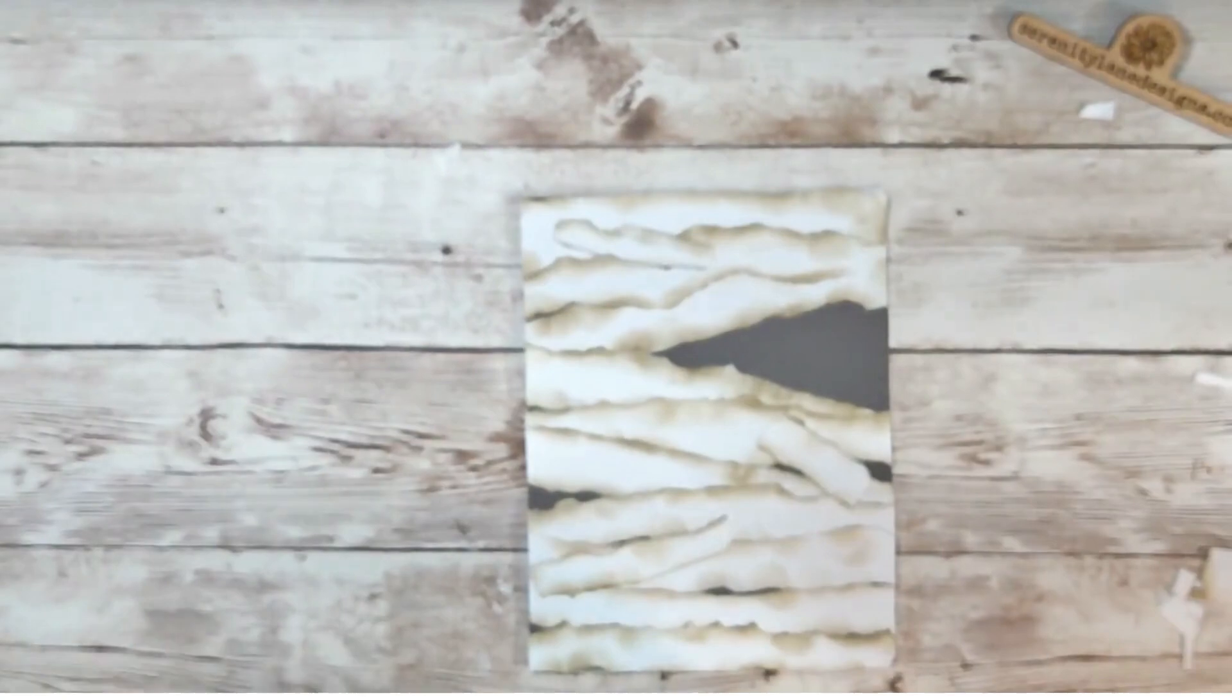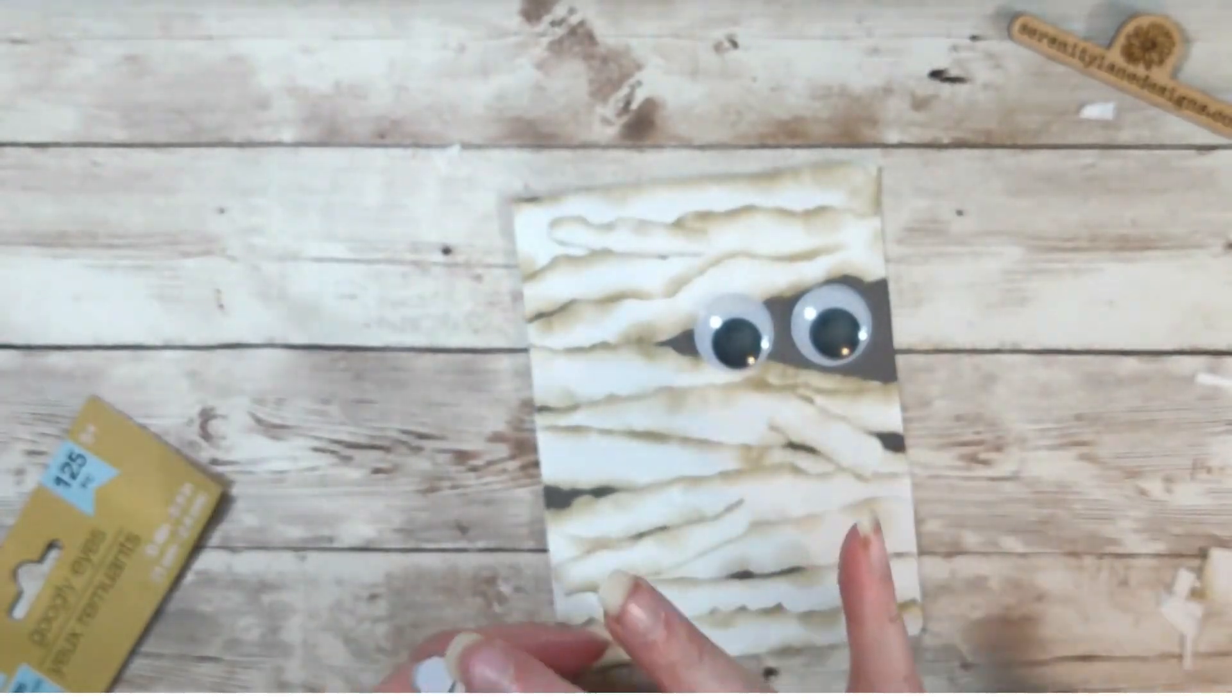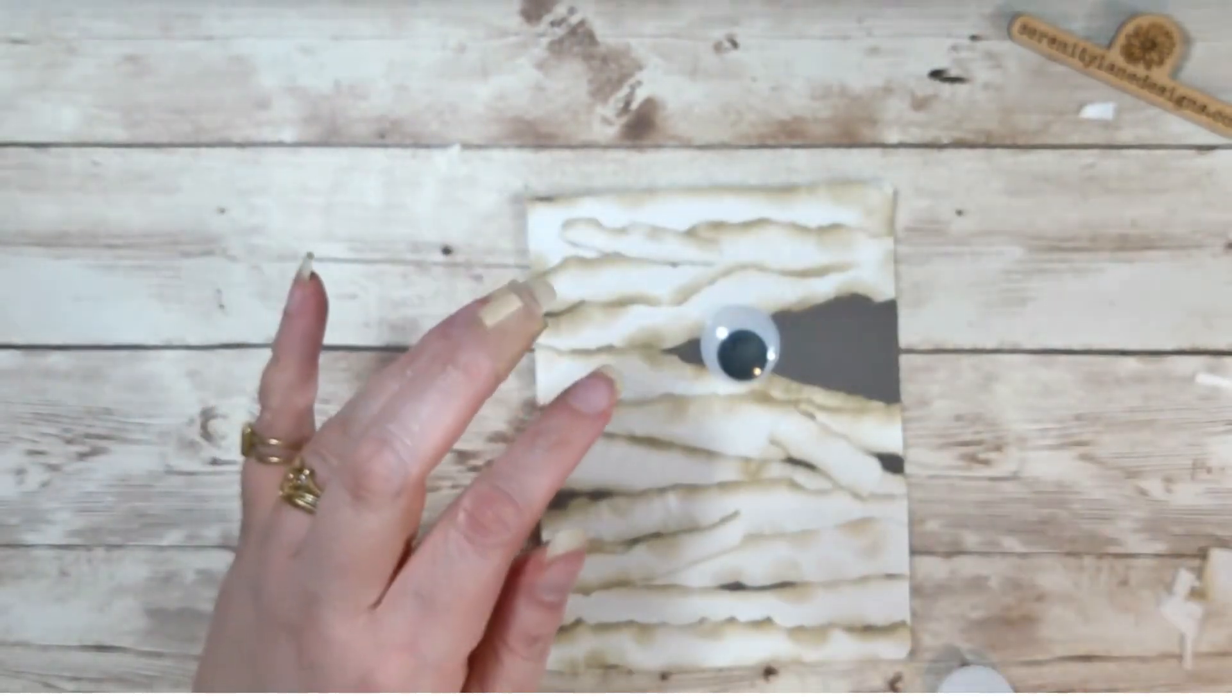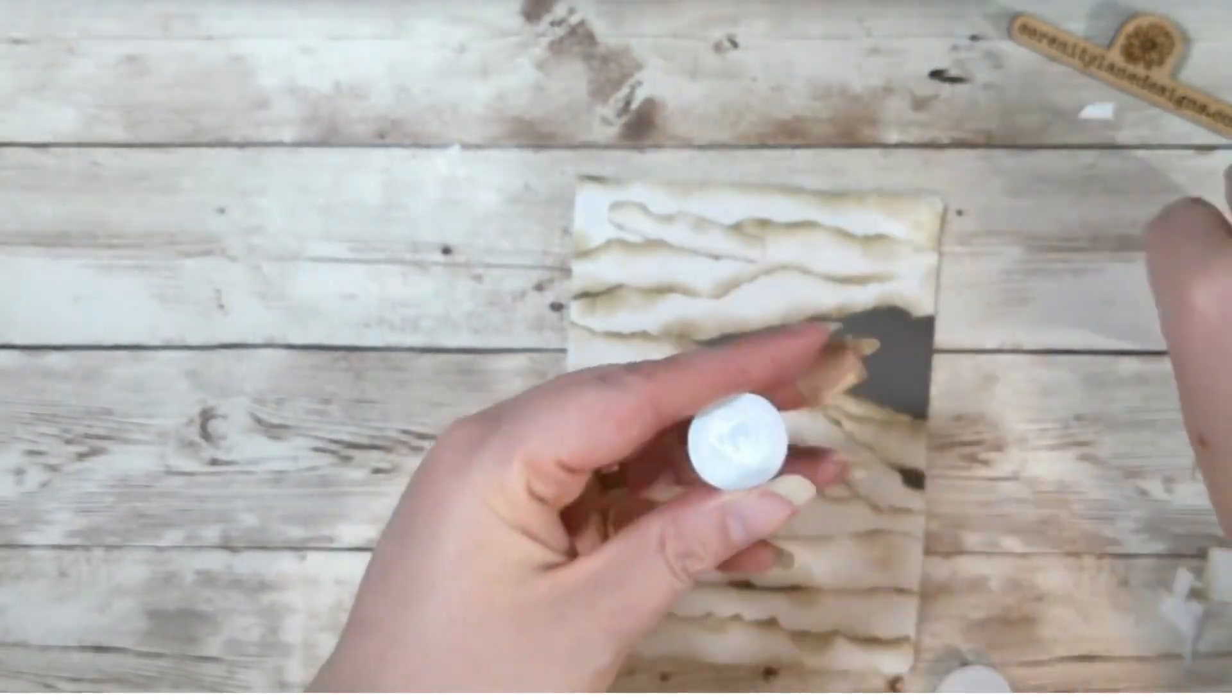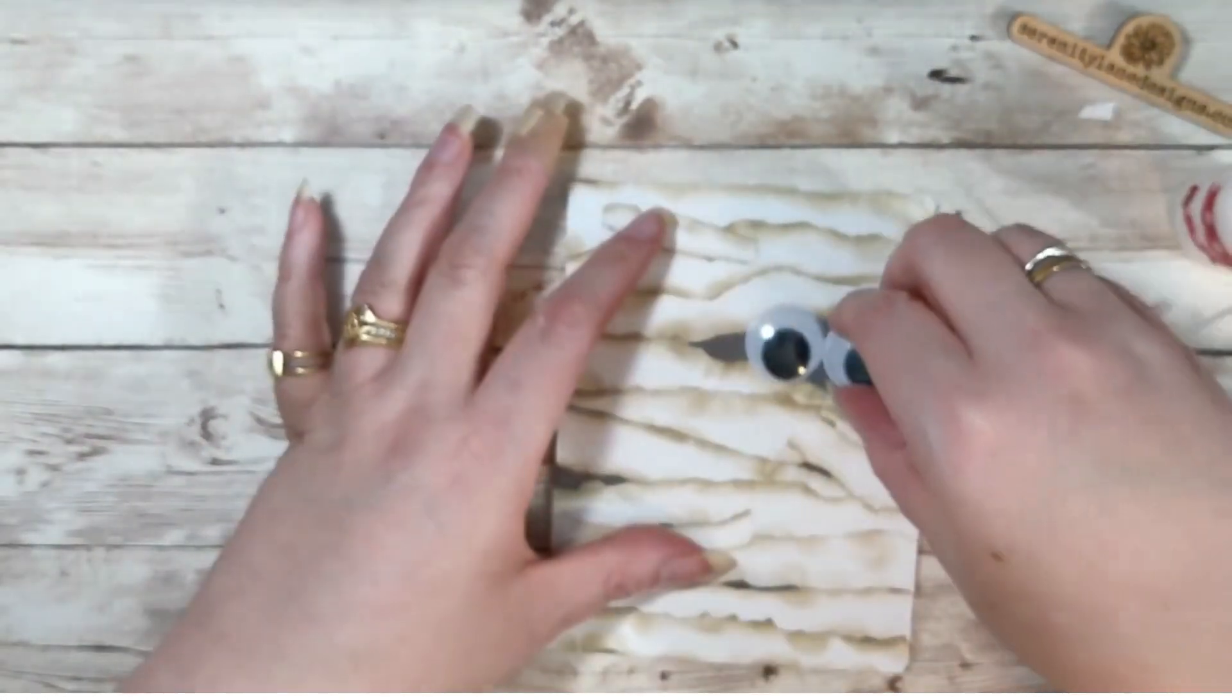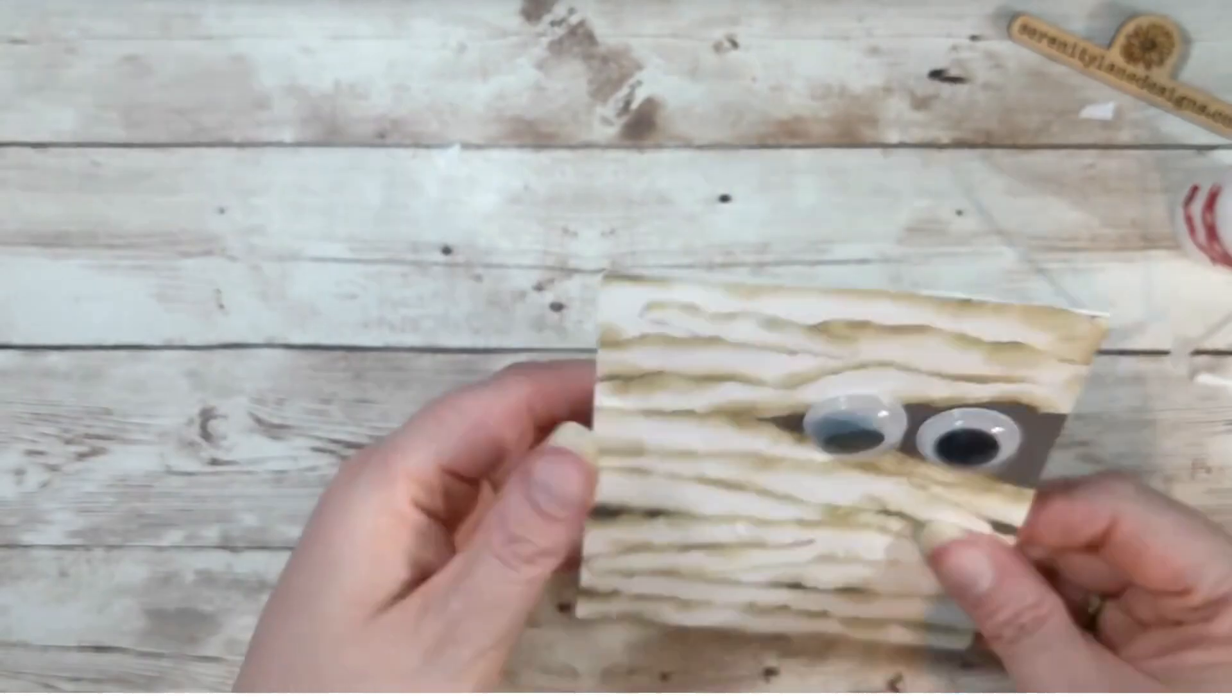Now we're going to take some wiggly eyes. I'm going to use the great big ones in the package. And we're going to glue those in the open space where he's peeking out. And there you've got it.